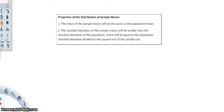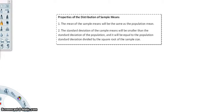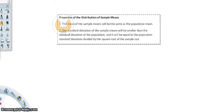Why is sampling error important? It's important because we will be talking about the properties of the distribution of sample means. The first property is that the mean of the sample means will be the same as the population mean. We also must know that the standard deviation of the sample means will be smaller than the standard deviation of the population, and will equal the population's standard deviation divided by the square root of the sample size.